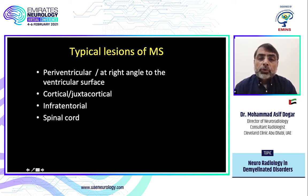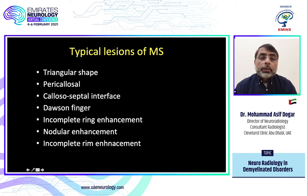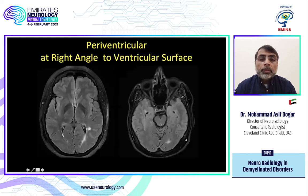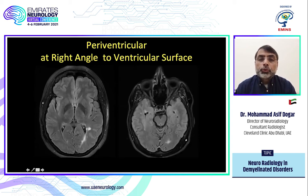MS lesions are periventricular, usually at right angles to the ventricular surface. They can be cortical or juxtacortical, infratentorial, or in the spinal cord. Typical lesions are triangular in shape, can be pericalosal along the calloseptal interface, and can have a Dawson finger appearance, incomplete ring enhancement, or nodular enhancement. Here you can see a typical periventricular lesion at right angle — very specific for MS along the temporal horn.